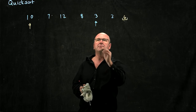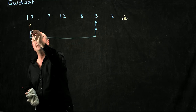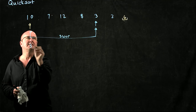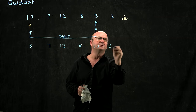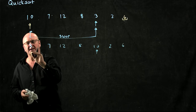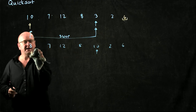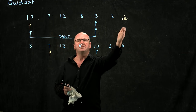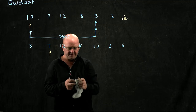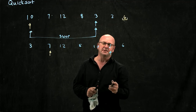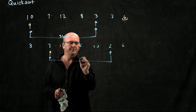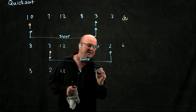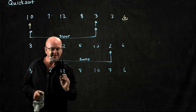Is 3 larger than 6? No. Now we swap the 3 and the element where our first counter is. So we end up with a list that is 3, 7, 12, 8, 10, 2, and 6. After the swap we increment that counter to the next position — this is the next thing larger than our pivot. Now we move our counter up: is 2 larger than 6? No. So we swap the 2 and the 7, ending up with 3, 2, 12, 8, 10, 7, and 6. We've done the swap so we increment our counter.